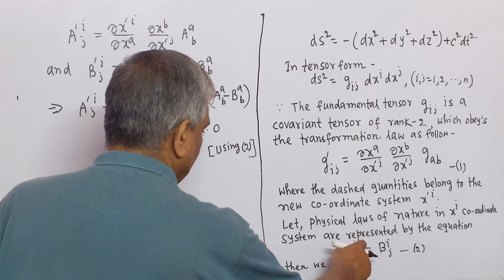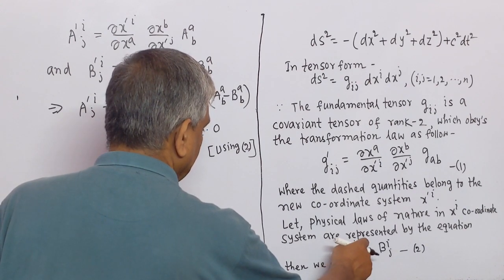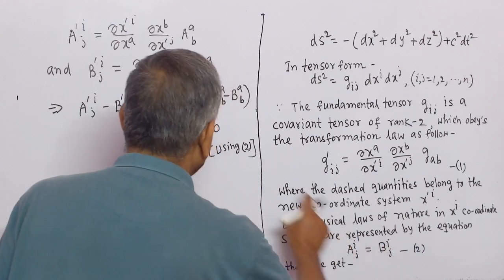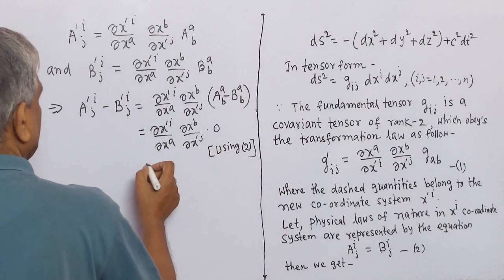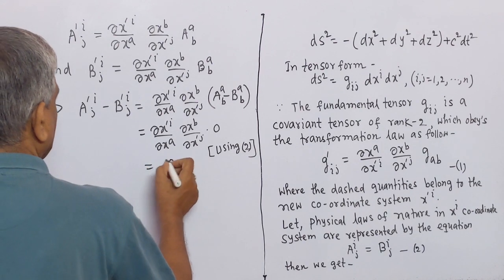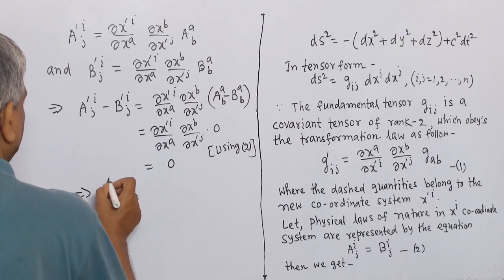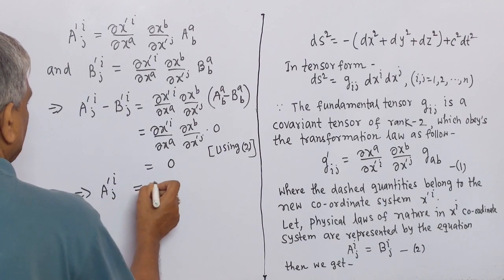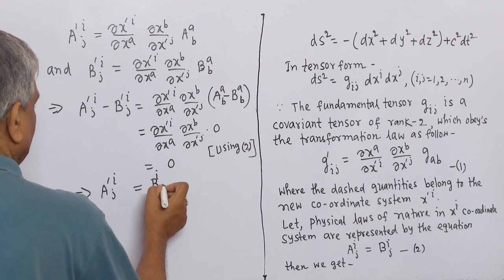Since aij = bij, in place of i we write a and in place of j we write b, so aᵇₐ = bᵇₐ, and this equals zero. This implies that a'ⁱⱼ = b'ⁱⱼ.